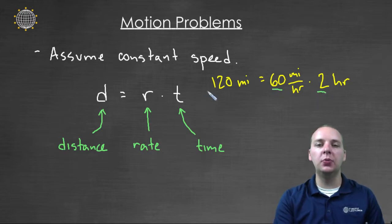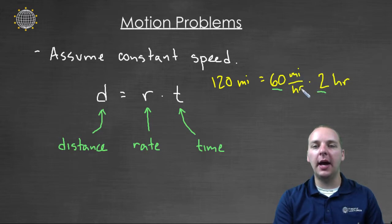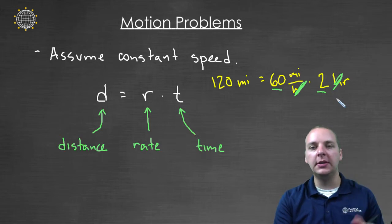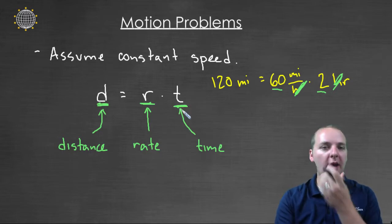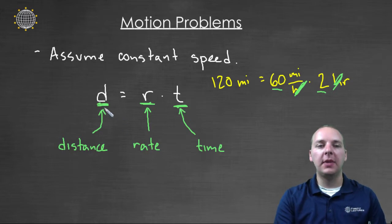And so we see how this works out. We see how these are related. Sixty times two is one twenty, and miles per hour times hours - if the hours units cancel, one's in the numerator, one's in the denominator, you would get a hundred and twenty miles. So the distance that you travel is equal to the rate of speed that you're traveling times how long you travel at that speed. Everything revolves around distance equals rate times time.